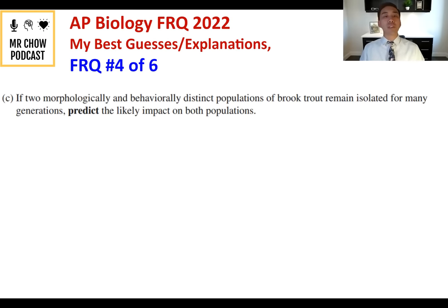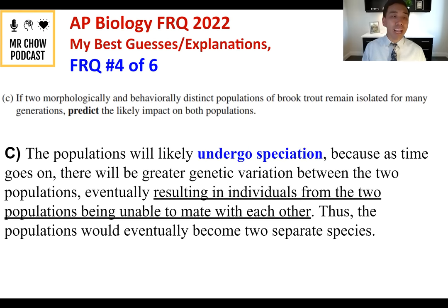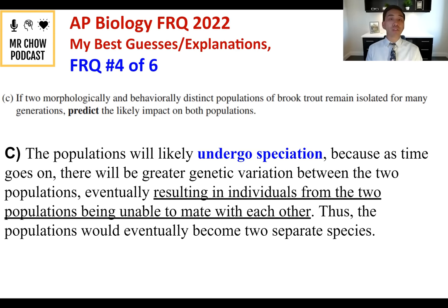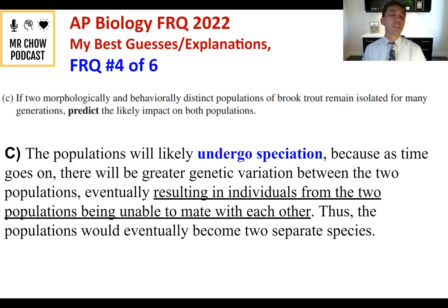Question 4C: If two morphologically and behaviorally distinct brook trout populations remain isolated for many generations, predict the likely impact. Most likely, speciation will occur. As time goes on, greater genetic variation between the two populations will accumulate, resulting in individuals from the two populations being unable to mate with each other. The populations would eventually become two different species.